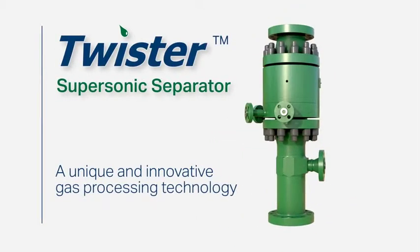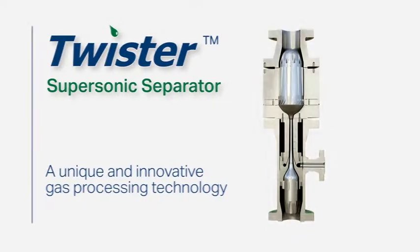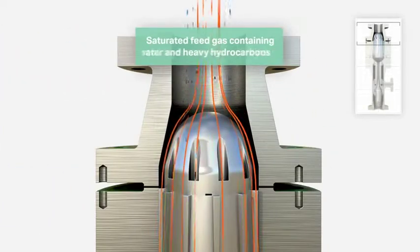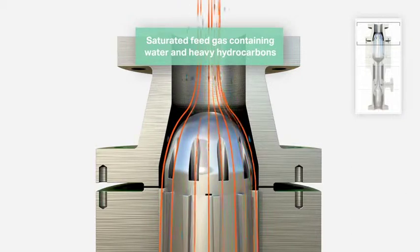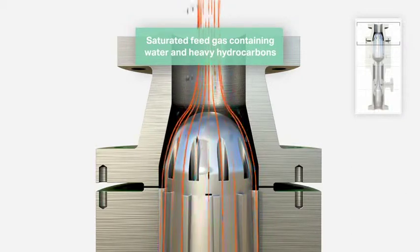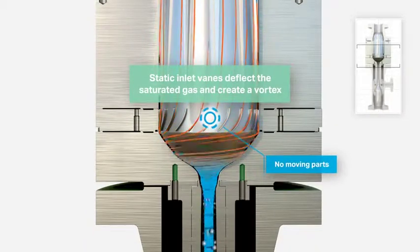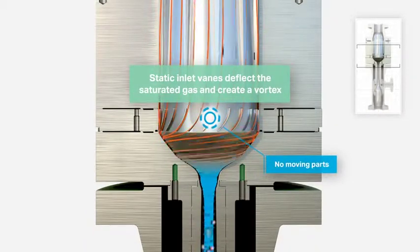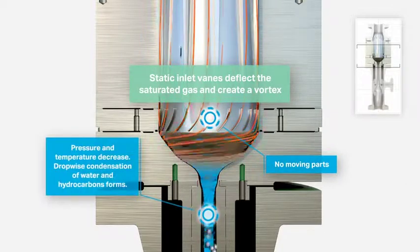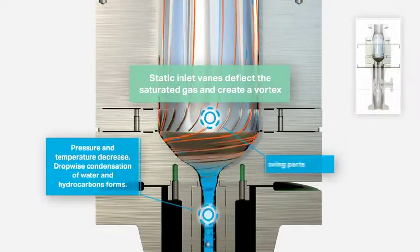The Twister supersonic separator is a unique and innovative gas processing technology. The saturated gas feed from the inlet separator containing water and hydrocarbons enters the system. Static inlet veins deflect the saturated gas and creates a vortex, reducing pressure and temperature and forming droplets through condensation.